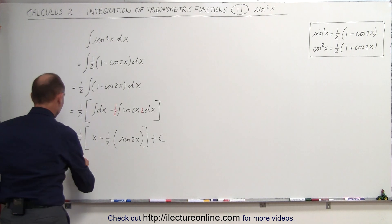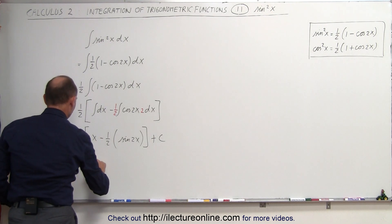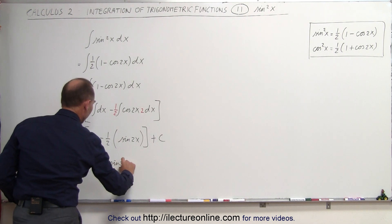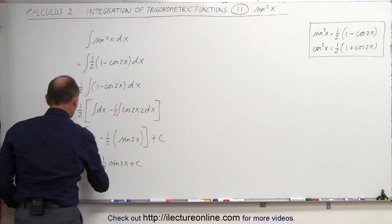Now, simplifying this, this is equal to one-half x minus one-quarter sine 2x plus a constant of integration.